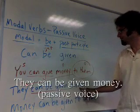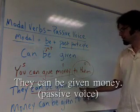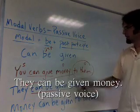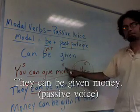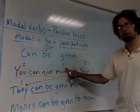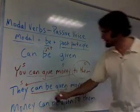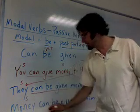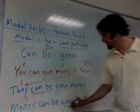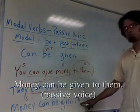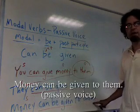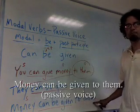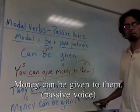...money. Or I can take the direct object, 'money,' and make it the subject: 'Money can be given to them.' So both 'They can be given money' and 'Money can be given to them' are valid passive forms.